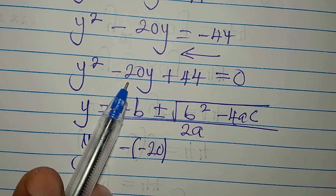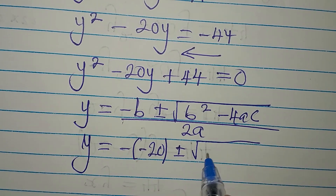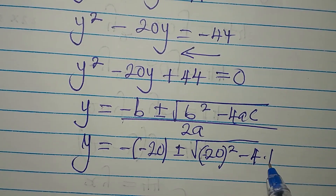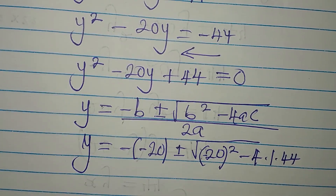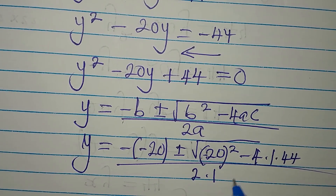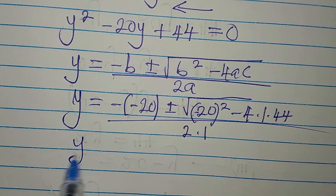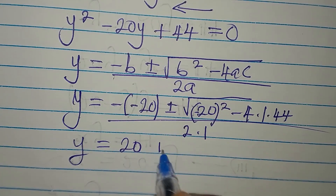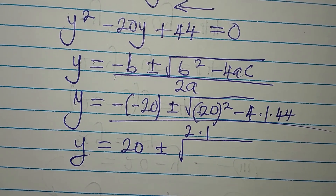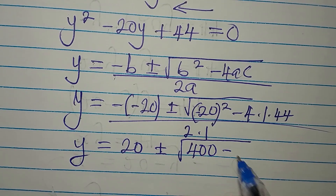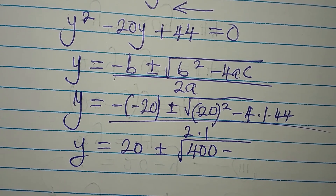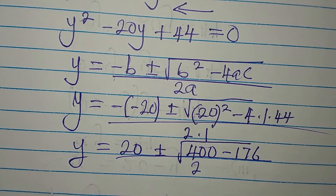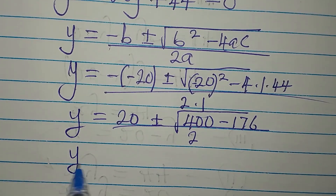Our values: b is negative 20, a is 1, c is 44. So y equals minus (negative 20), which is plus 20, plus or minus the square root of (negative 20) squared minus 4 times 1 times 44, all over 2 times 1. That gives 20 plus or minus the square root of 400 minus 176, all over 2.